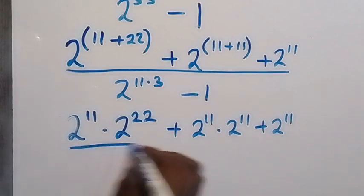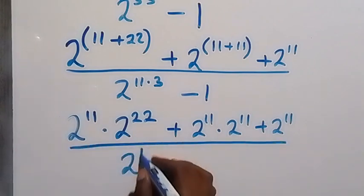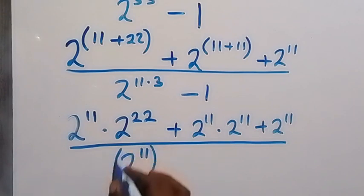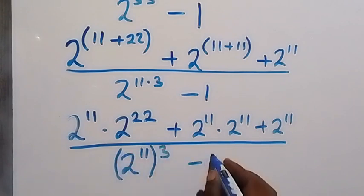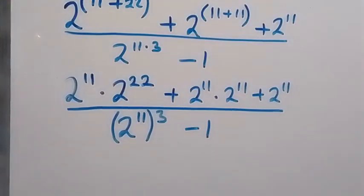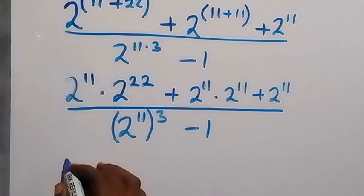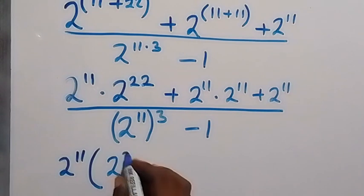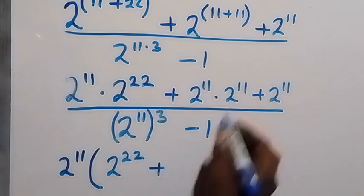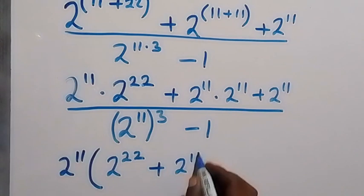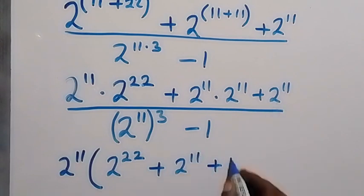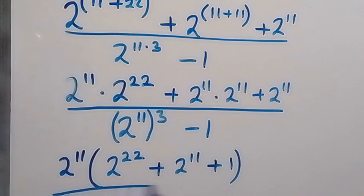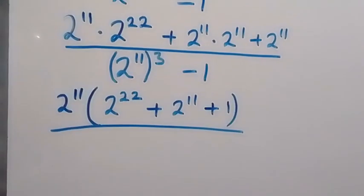This is divided by 2 raised to power 11 then to the power 3, minus 1. From here, we have 2 raised to power 11 common, so let's take it out. This will be 2 raised to power 11 into bracket: 2 raised to power 22 plus 2 raised to power 11, plus what will remain here is plus 1.